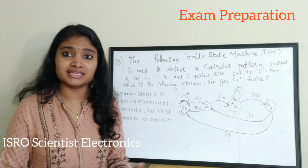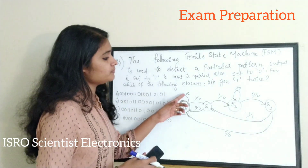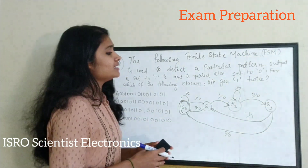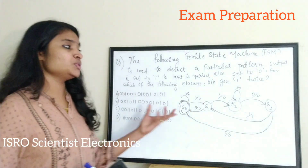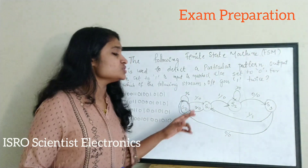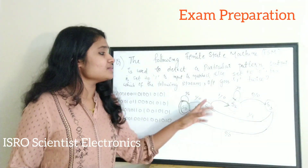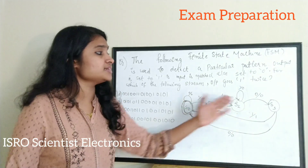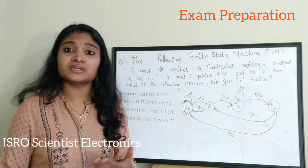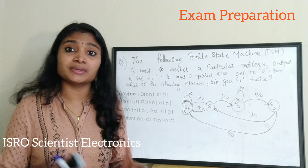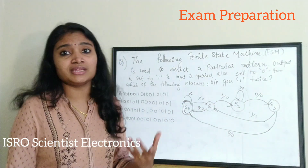To find whether it is a Mealy or Moore type of sequence detector, you just have to see how the input is given. Here on the branches you see notation like 0/0 or 1/0 — that is input/output. For a Mealy machine the state diagram is drawn this way. For a Moore machine, each state would be associated with its corresponding output, but for the Mealy machine the output also depends on the input.